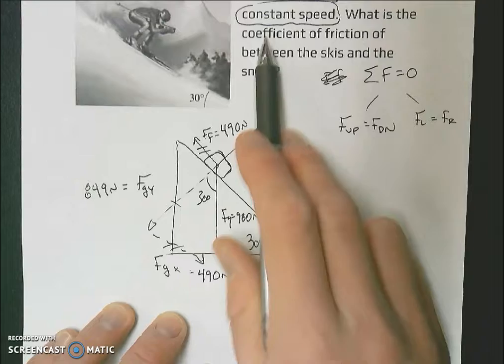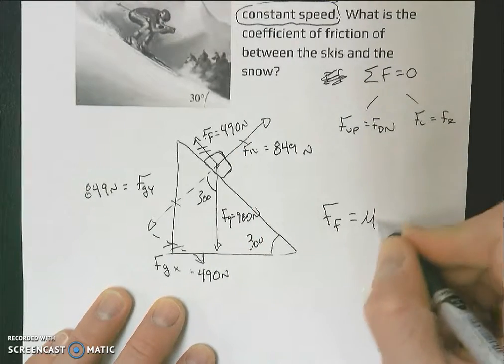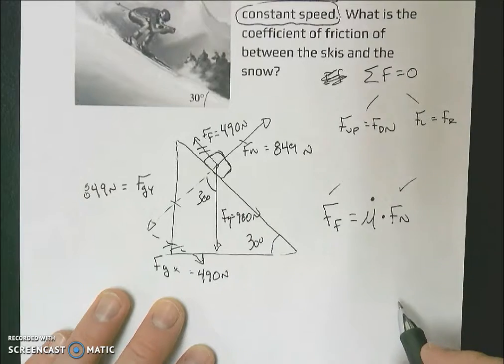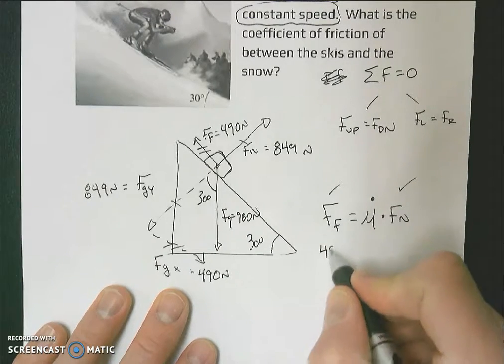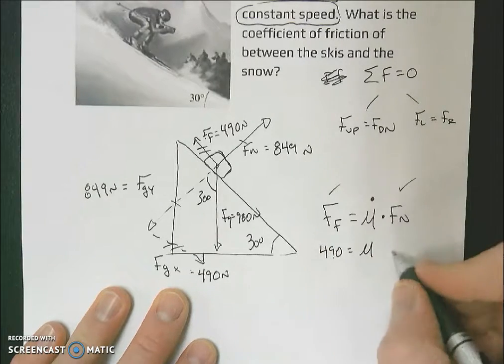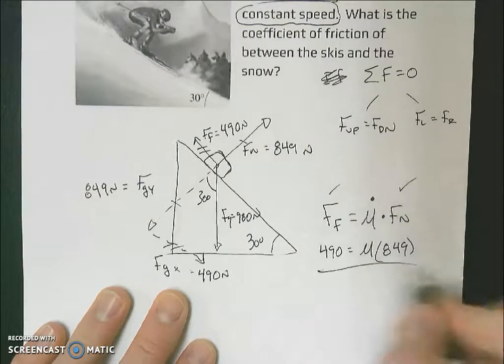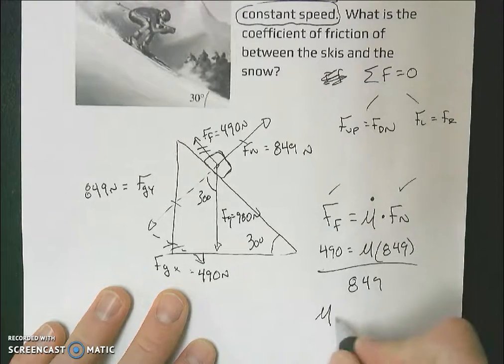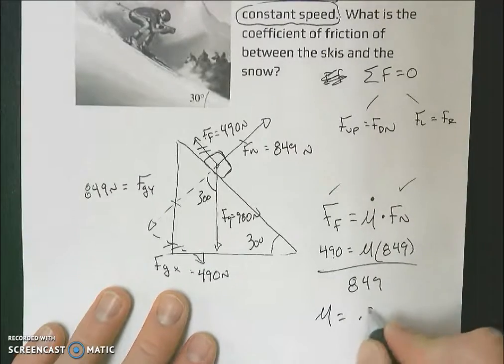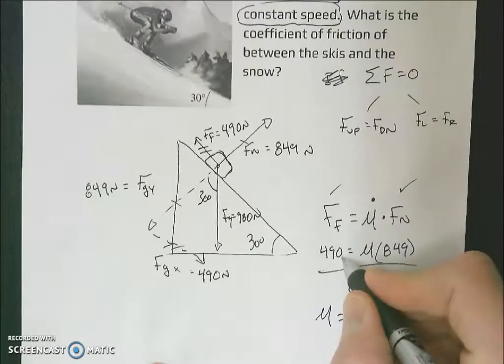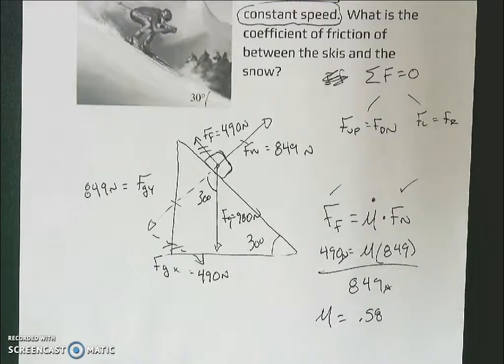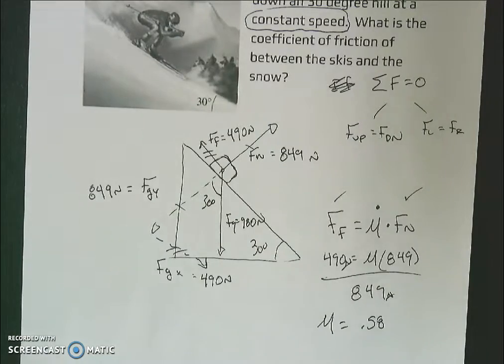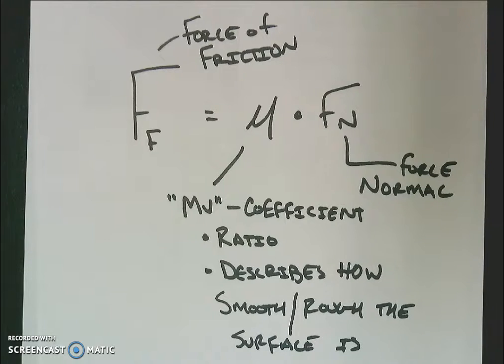This question is asking us to find the coefficient of friction between the skis and the snow. That means we need to use our force of friction equation to solve for this. We have our force of friction. We have our force normal. We can plug our numbers in. Force of friction is 490. That's going to be equal to mu times our normal force, 849. If I divide both sides by 849, I get a coefficient of friction of 0.58. Again, no label here because it's a ratio of a force over a force, and that cancels. It's also under 1, which tells me I probably did this right. Most coefficients of friction are under 1. That's a quick recap, quick summary of our coefficient of friction and our force of friction stuff.